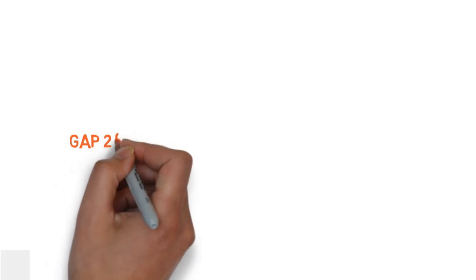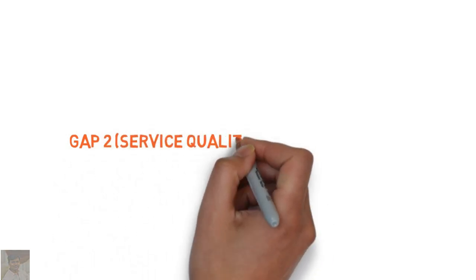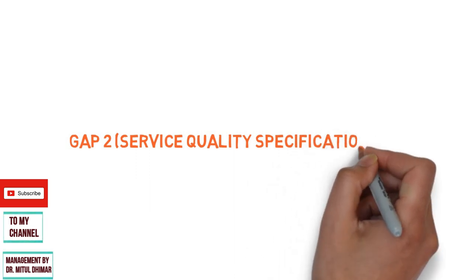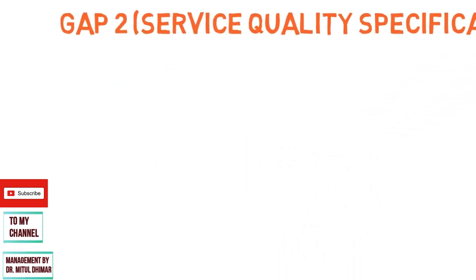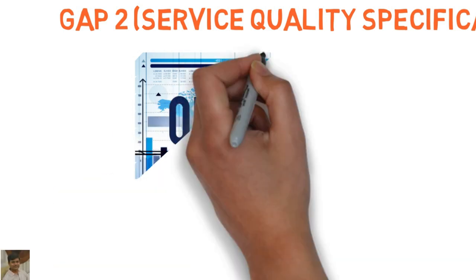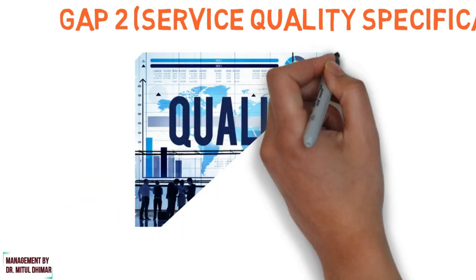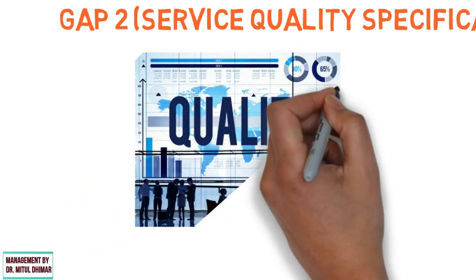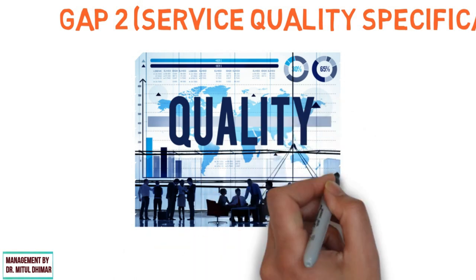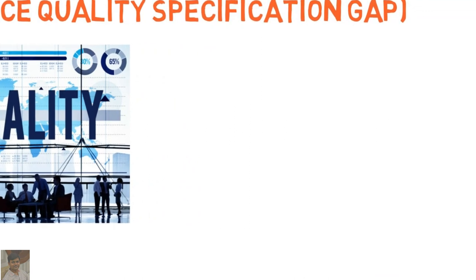Gap number two is the service quality specification gap. The second gap is the gap between management perception and service quality specification. The organization has an understanding of what it thinks the customer expects, but the organization is not able to translate these into specifications.